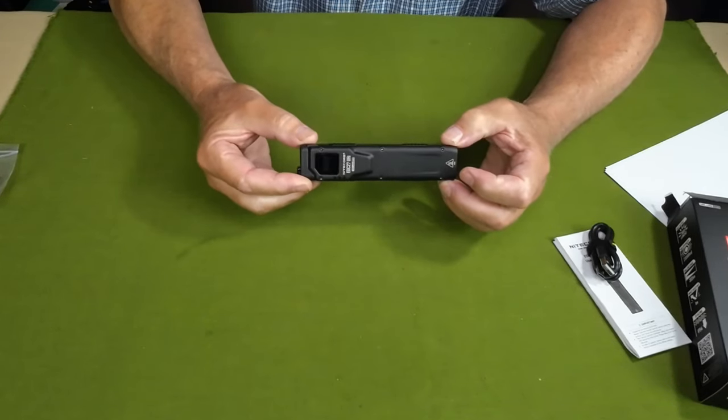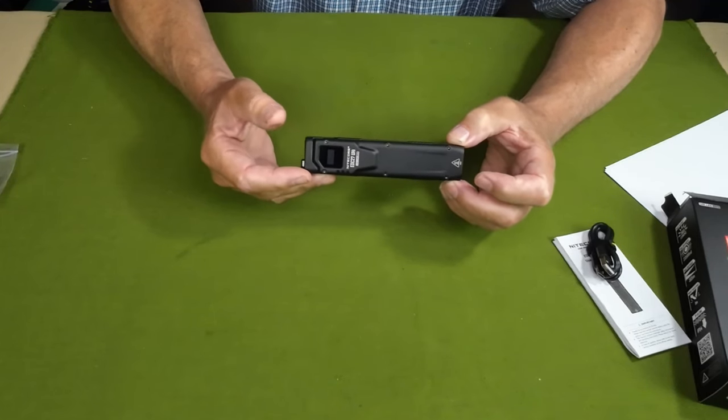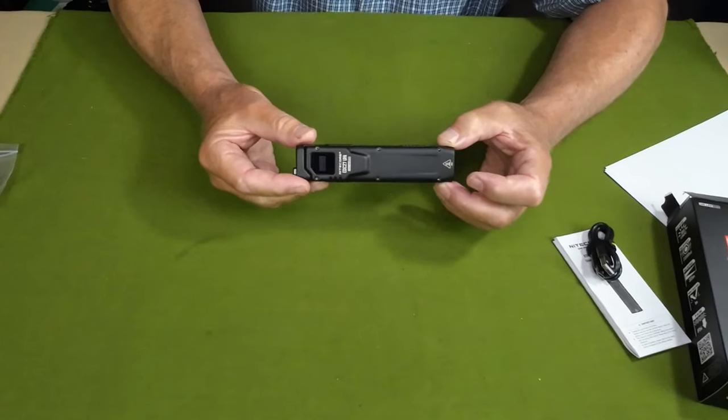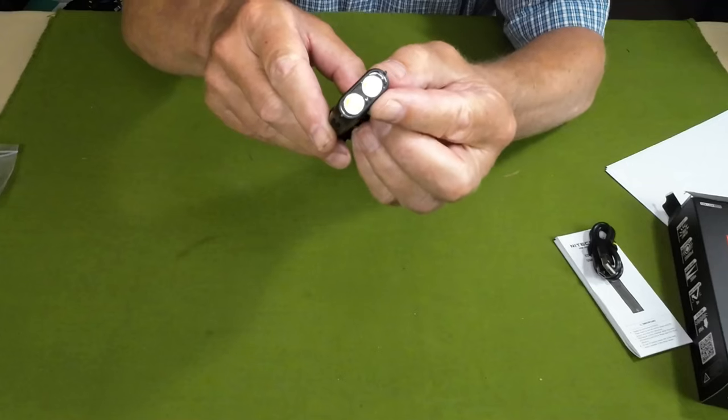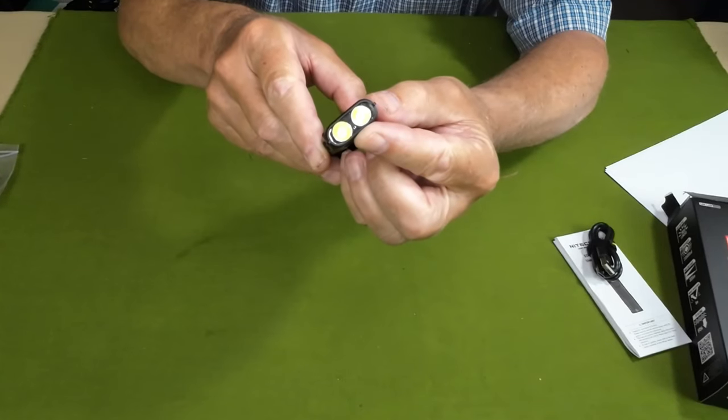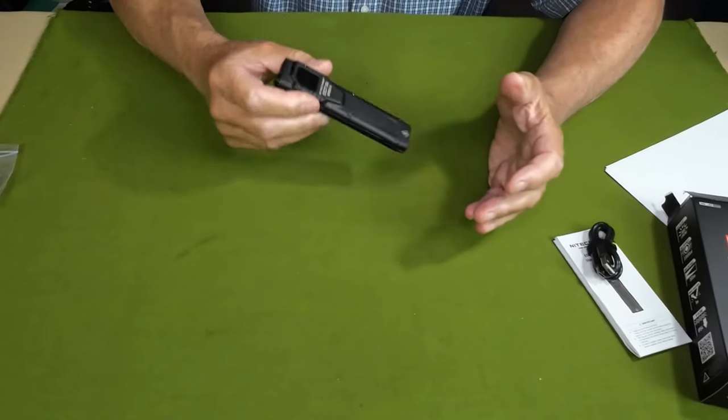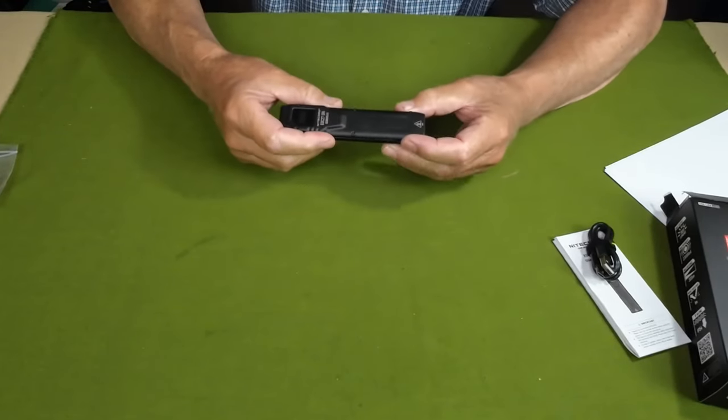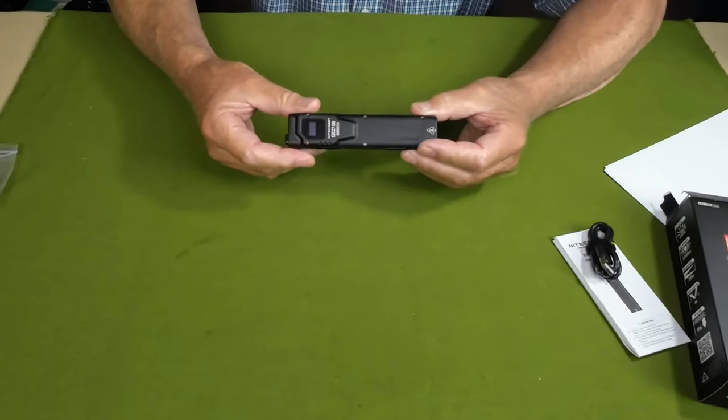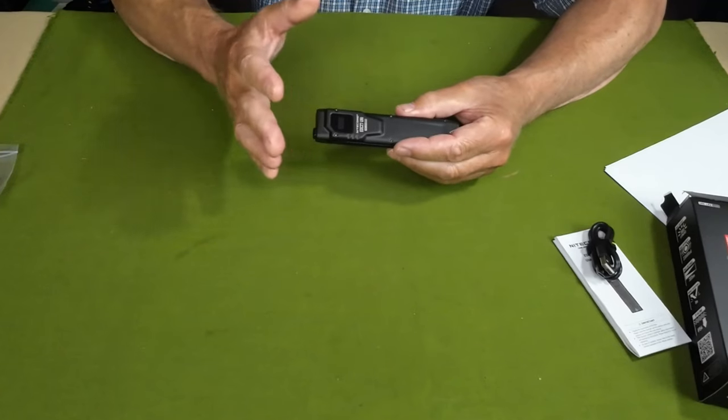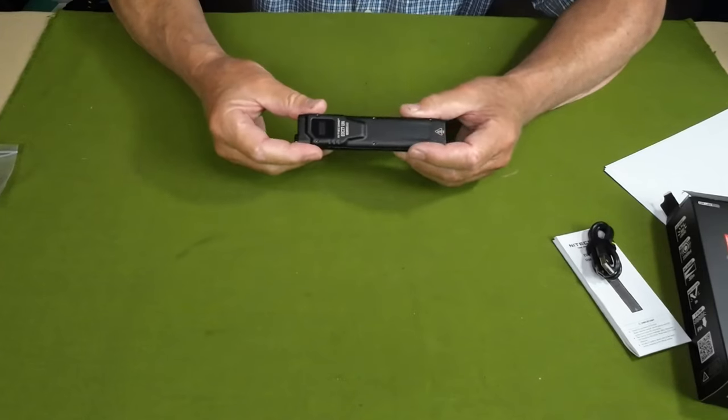It also has both a semi and full electronic lockout. Right between the two LEDs is a proximity sensor. If you had this in your pocket or it was laying down on something and it had been on turbo or the 1,100 lumen high setting, it would automatically reduce the output to 200 lumens so you're less likely to cause damage from heat buildup.